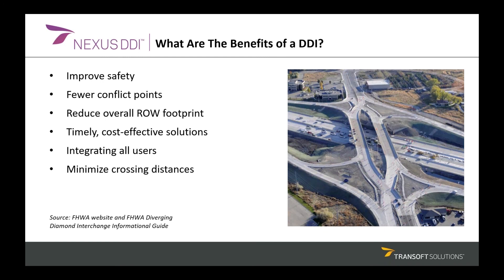DDIs often require fewer lanes than a conventional design to handle the same amount of traffic. Smaller project footprints mean you need less right-of-way, resulting in fewer impacts to adjacent areas. Generally, DDIs are an easier and quicker alternative to construct. A DDI can also cost less — in some cases, as much as 75 percent less than an equivalent conventional diamond or single-point urban interchange. Additionally, DDIs integrate all users: safe and convenient pedestrian walkways and minimized crossing distances are important components of any well-designed interchange.